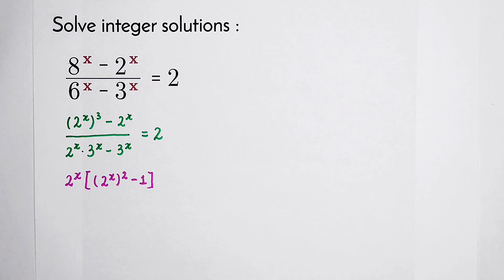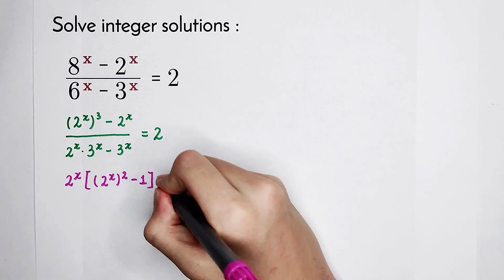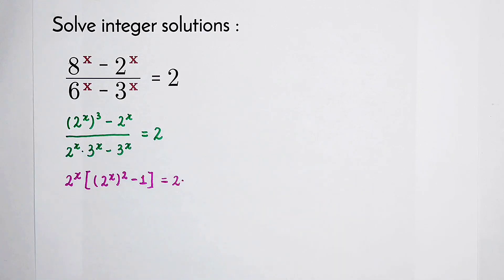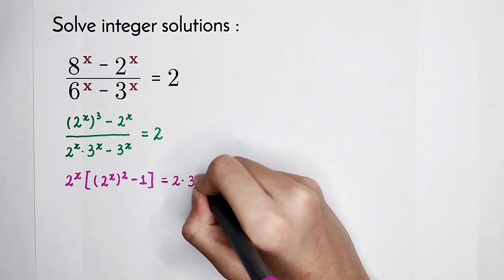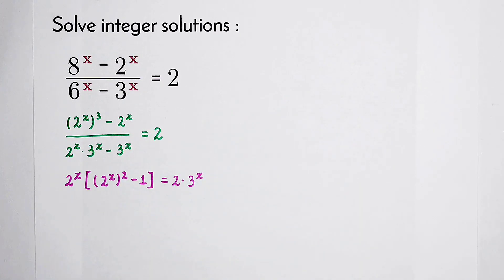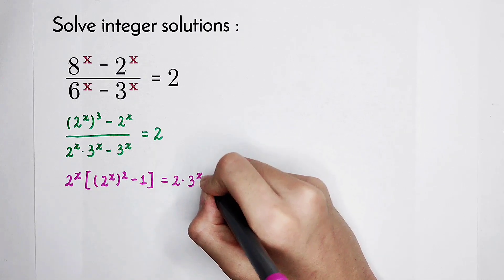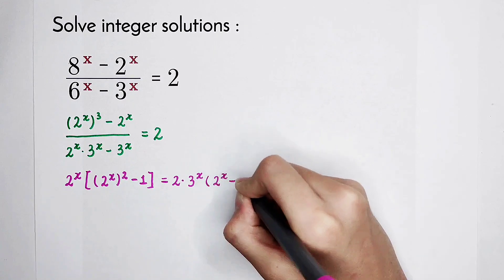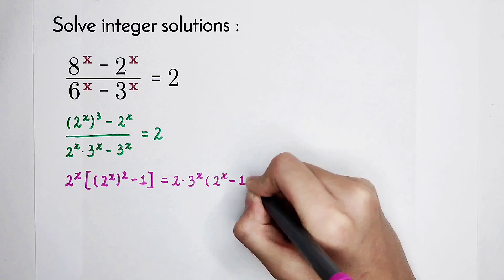Now I'm going to multiply by this denominator on both sides. It is equal to 2 times this. In this denominator term, I can take out 3 to the power of x. And what's in the bracket? 2 to the power of x minus 1.